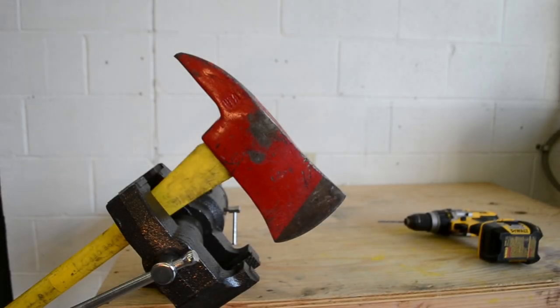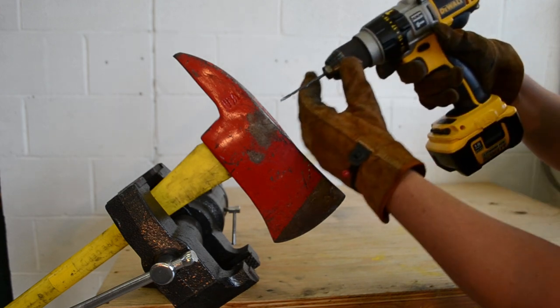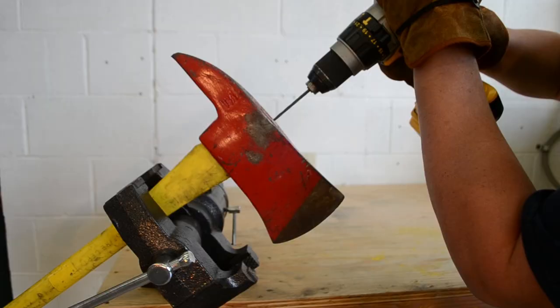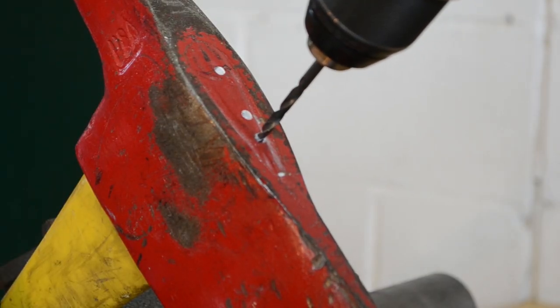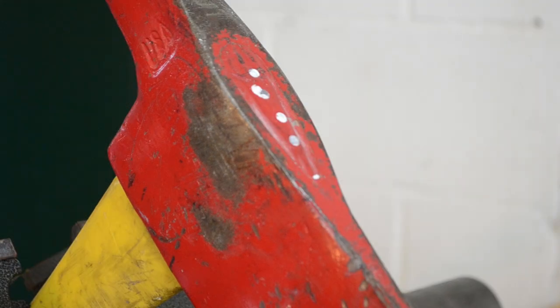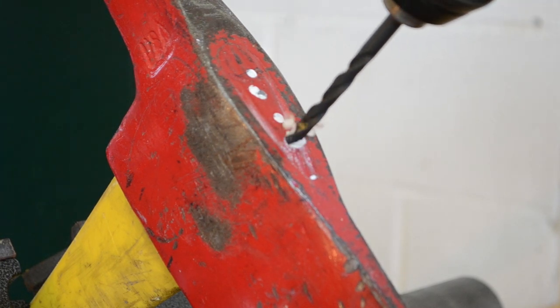First, start by securing the axe handle into a vise. Then use a drill and drill bits to drill the epoxy out of the eye of the axe head. Step up to larger size drill bits as you go.